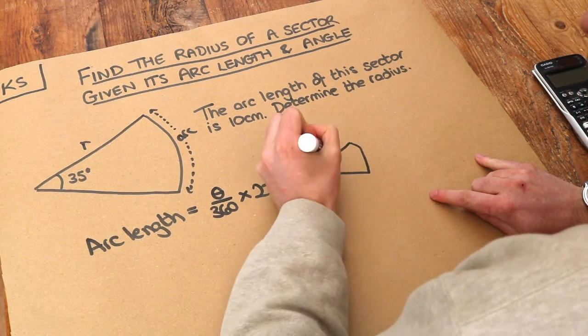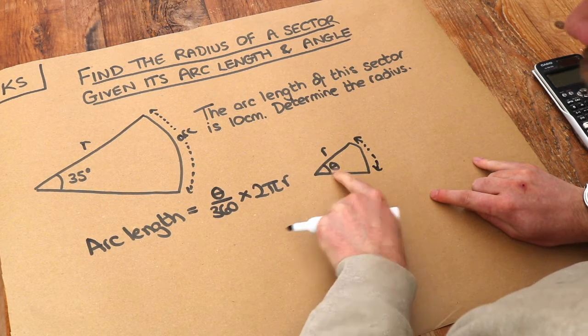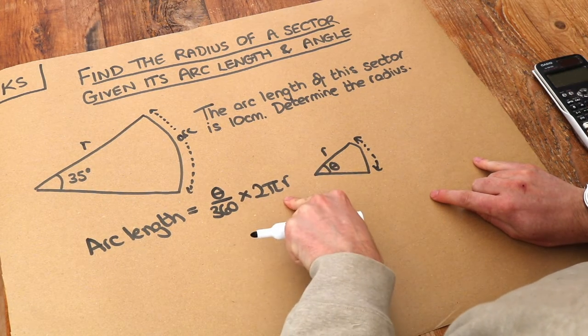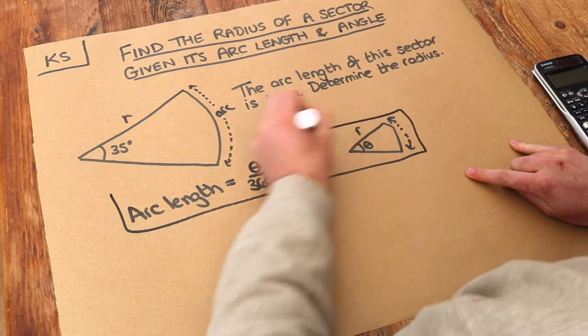I've got an angle θ here and a radius r, and I want to find this arc length here. I want to do θ/360ths of the full circumference of a circle. So that's the key formula that we need to use.